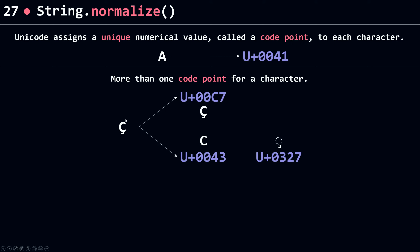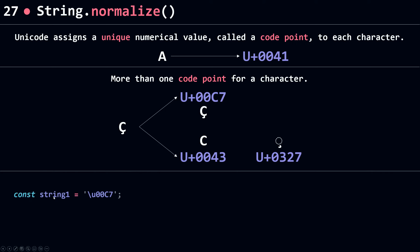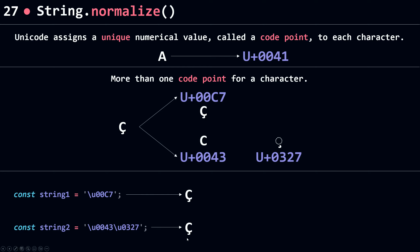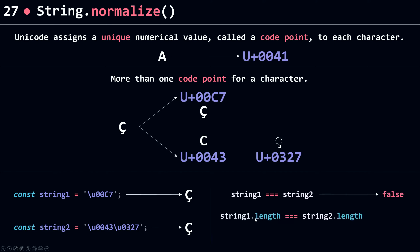Combining the code for C and the code for the cedilla gives you the C with the cedilla. In JavaScript, when I assign that single codepoint to string1, I get that character when I console log it. When I assign those two codepoints to string2, I get the same character visually. So both strings have the same visual appearance, but they don't have the same codepoints.